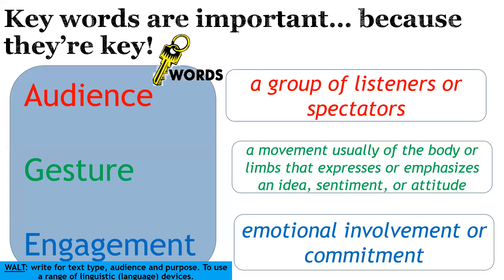Firstly, Year 10, I thought it was really important to reference these key words — they are key words because they're important. So we're going to look at our audience. An audience is a group of listeners or spectators. You have to present your speech to an audience so you can have questions asked — it's part of a live question and answer situation. Your speaking and listening is a professional formal qualification that goes towards your language GCSE. So you will need to write the speech, perform the speech, and take questions from an audience. A gesture is a movement, usually of the body or limbs, that expresses or emphasizes an idea, sentiment or attitude.